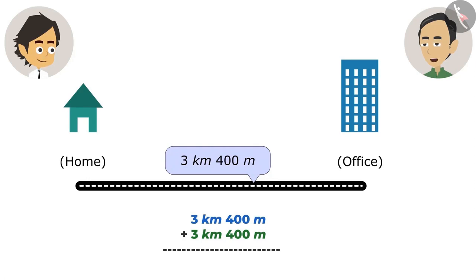Look, we can add numbers only when their units are the same. So here we will add the value of meter to the meter, and we will add the value of kilometers to kilometers. If you just add the value of the meter, the answer will be 800 meters. And adding the value of kilometers, the answer will be 6 kilometers. This means that you travel 6 kilometers 800 meters to go to and come back from the office. Yes Ayushman, you are absolutely right.